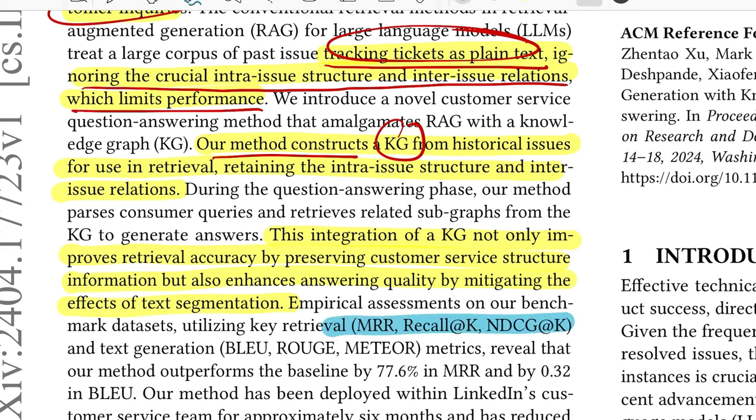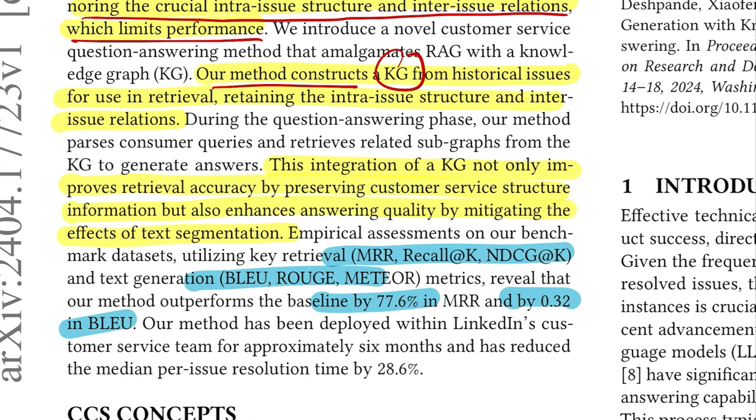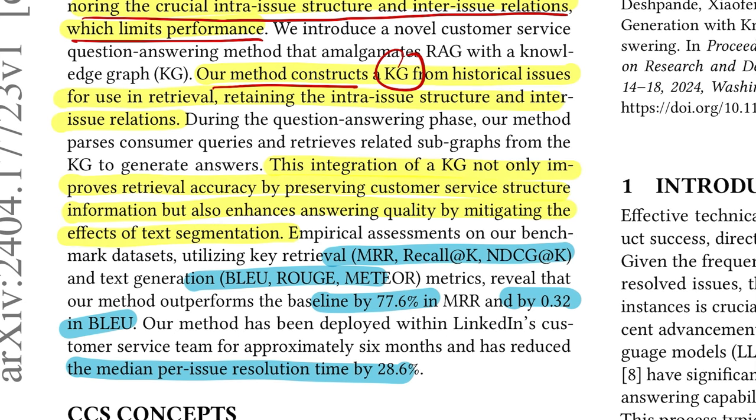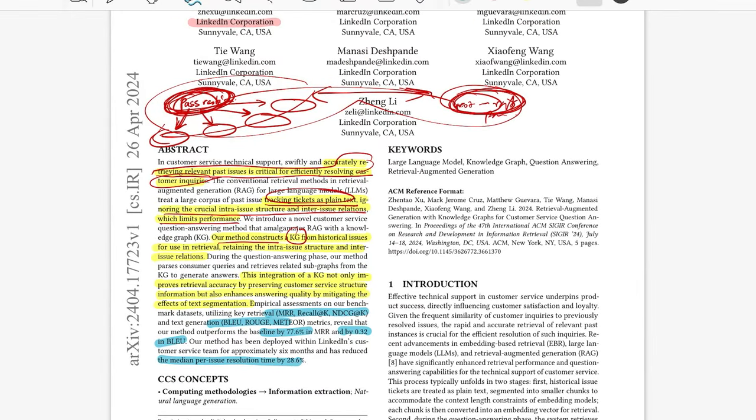On empirically evaluating it on benchmark datasets using metrics like relevance ranking recall, NDCG for the retrieval part, and then BLEU ROUGE for the generation part, they observed that their method was 77.6% better in MRR compared to the baseline. For the generation piece it was 0.32 points better in BLEU. On pilot deployment where they compared their system against the original way of manually looking through these issues, median per issue resolution time reduced by 28.6%, which is a lot. So the intuition of treating issues as a knowledge graph first and then traversing a knowledge graph to get out the relevant subgraph kind of makes sense.